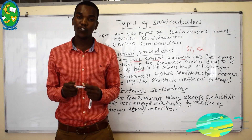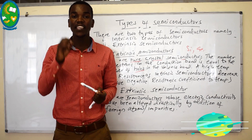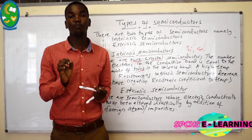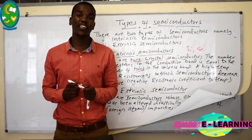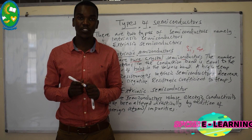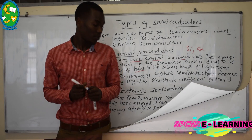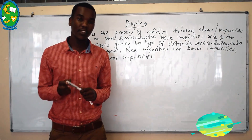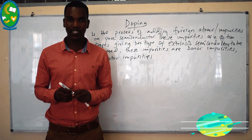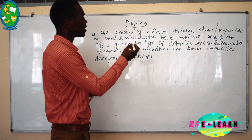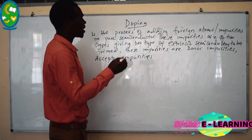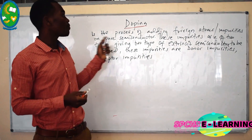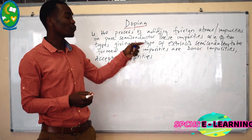The addition of foreign atoms creates a change in electrical conductivity because they change the number of charge carriers. Extrinsic semiconductors are formed by adding foreign impurities to pure semiconductors. The process of adding impurities to a pure semiconductor is known as doping — the process of adding foreign atoms or impurities to pure semiconductors.